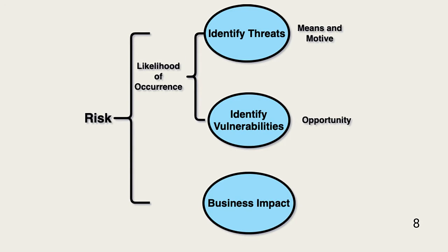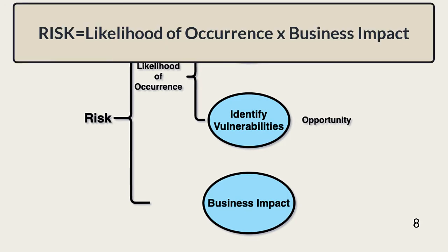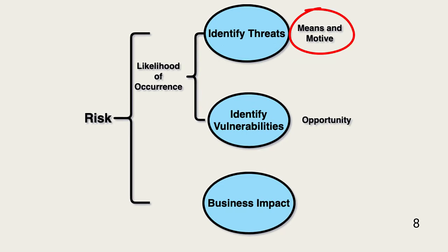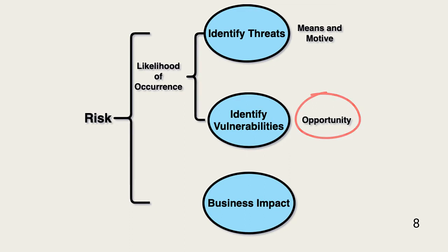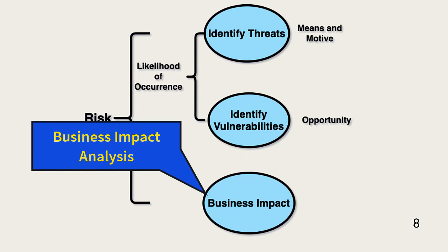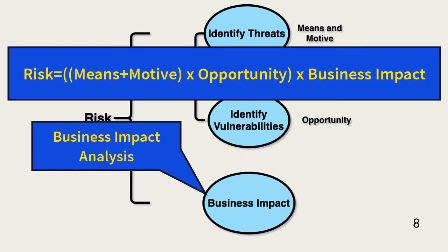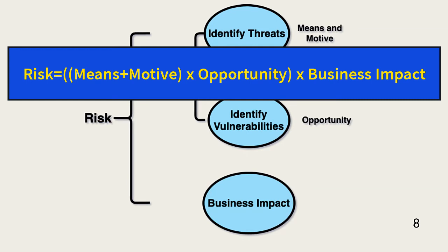Next is the risk assessment. Risk is a factor of likelihood of occurrence and business impact. Determining likelihood of occurrence was done during threat modeling — it included determining the skills and motives of probable threat actors based on the target, and also identified vulnerabilities available as opportunities to the threat actors. A business impact analysis determines the financial hit an organization may experience if a threat actor interrupts business functions or compromises confidentiality or integrity. This formulaic model is one way to show how these three factors help determine risk.